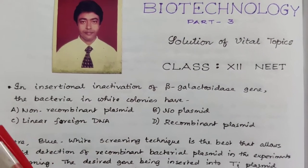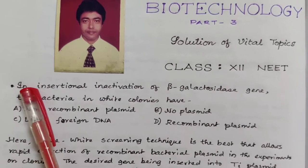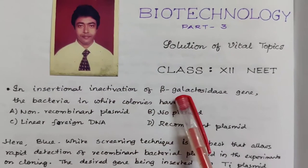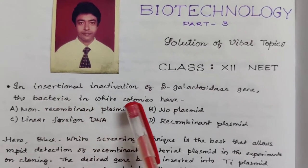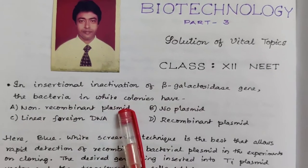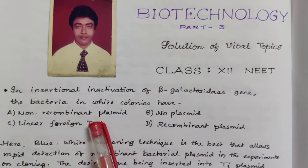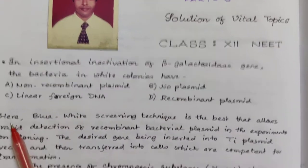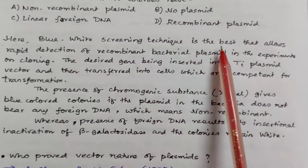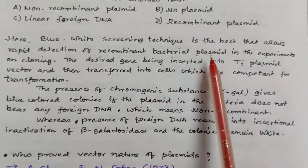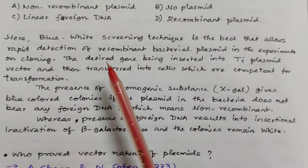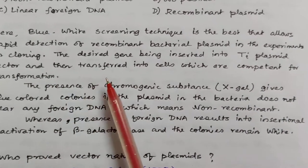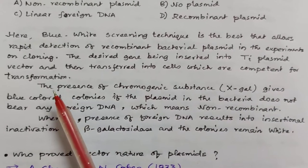What is insertional inactivation? In the case of insertional inactivation of the beta-galactosidase gene, bacteria in white colonies have: option A - non-recombinant plasmid, option B - no plasmid, option C - linear foreign DNA, option D - recombinant plasmid. The blue-white screening technique is the best method that allows rapid detection of recombinant bacterial plasmids in cloning experiments.